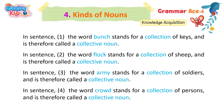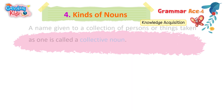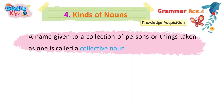In sentence 1, the word 'bunch' stands for a collection of keys and is therefore called a collective noun. In sentence 2, the word 'flock' stands for a collection of sheep and is therefore called a collective noun. In sentence 3, the word 'army' stands for a collection of soldiers and is therefore called a collective noun. In sentence 4, the word 'crowd' stands for a collection of persons and is therefore called a collective noun. A name given to a collection of persons or things taken as one is called a collective noun.